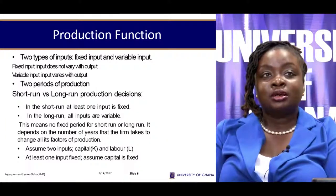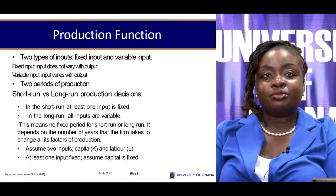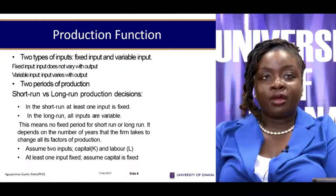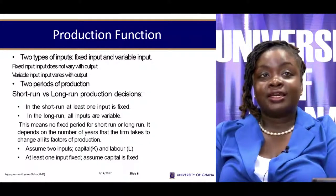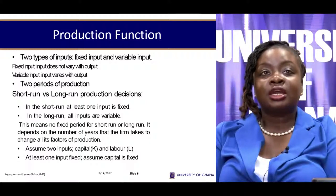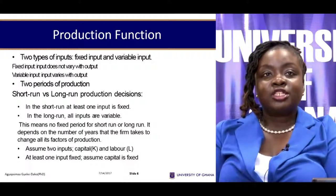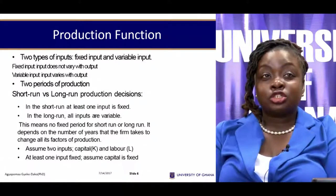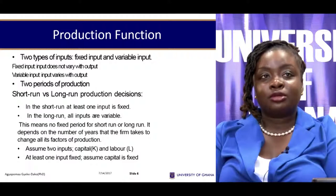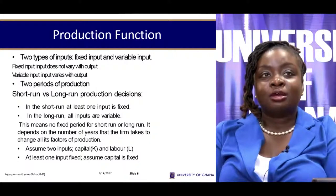The distinction between fixed and variable inputs is important because of two time periods in microeconomics: the short run and the long run. The short run is a period of production in which at least one factor is fixed. The long run is a period in which all factors can be varied. We cannot define the short run as one month or two weeks, or the long run as ten years — it's defined by whether inputs are fixed or not.